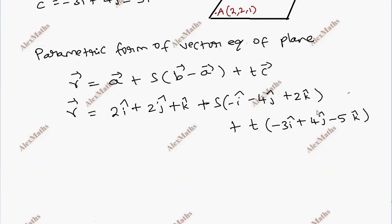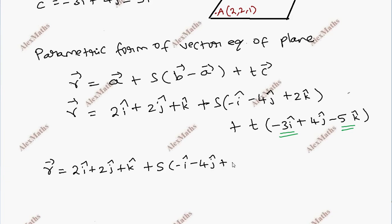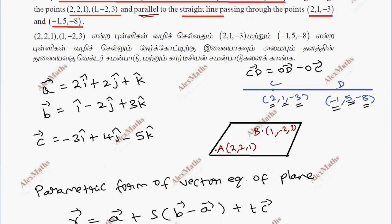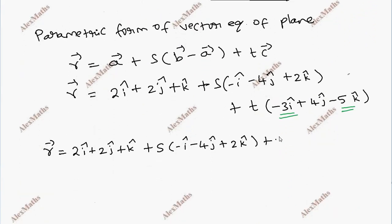Sometimes we have two negative signs, so throughout we do a sign change. R vector equals 2i plus 2j plus k, plus s times (i plus 4j minus 2k), plus t times (3i minus 4j plus 5k), where s and t belong to R.